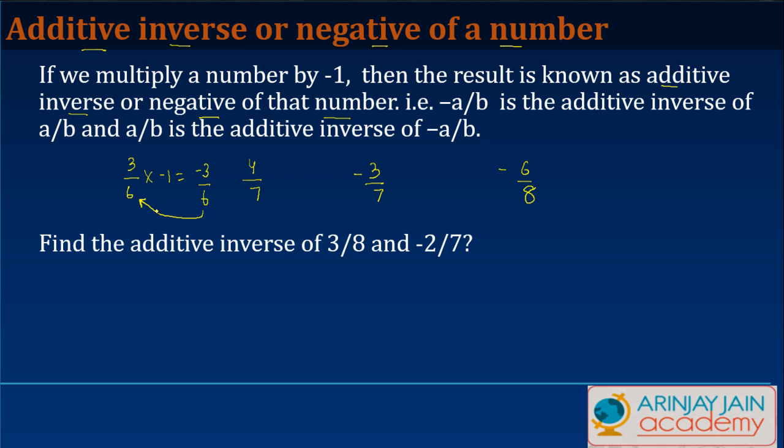Similarly, if you multiply this by -1, you will get -4/7. We say that -4/7 is the negative or the additive inverse of 4/7.